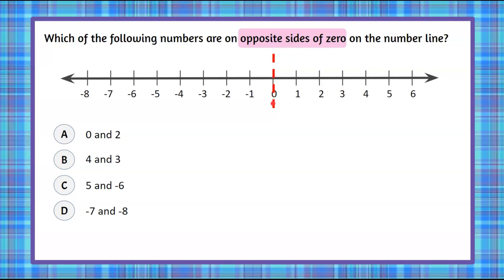Here's zero. We're going to plot each of these pairs of numbers to determine which pair is on opposite sides. Opposite sides means we're going to have one on the negative side and one value on the positive side. Left of zero are our negative values, and to the right of zero are our positive values.